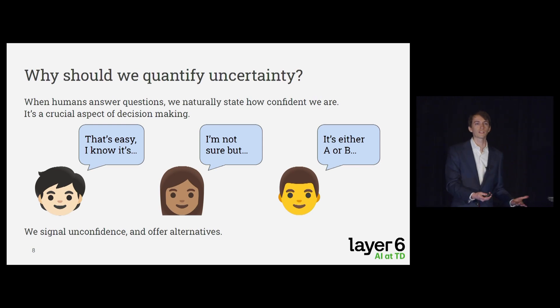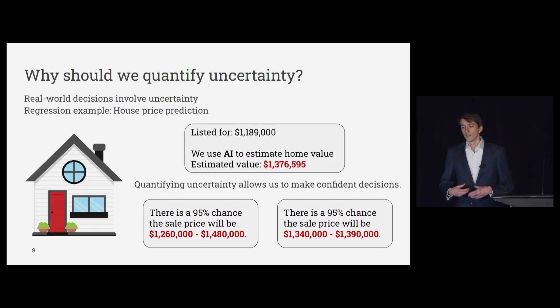This is not at all how humans discuss ideas and answer questions to one another. We very naturally state how confident we are in our answers. We say things like, oh, that's easy, I know what the answer is, or I'm not sure about this, but it might be so-and-so. We also, along with signaling our own confidence to other people, we offer alternatives when we're not sure. We say, you know, I'm not quite sure of the answer, it might be A or B. These kind of ideas of signaling confidence and offering alternatives is very much how we go about making decisions in our everyday life thousands of times a day.